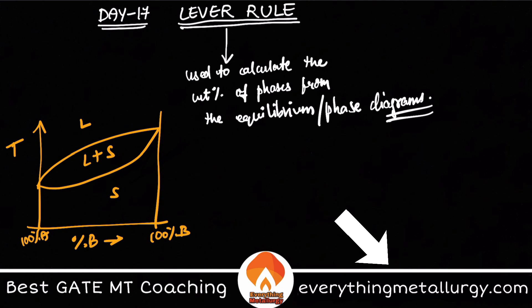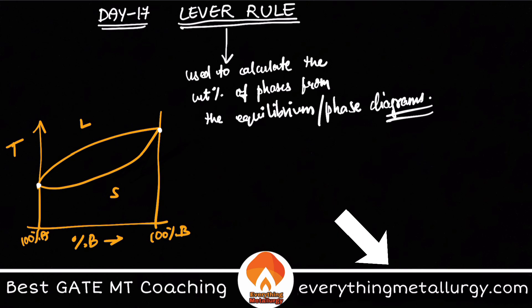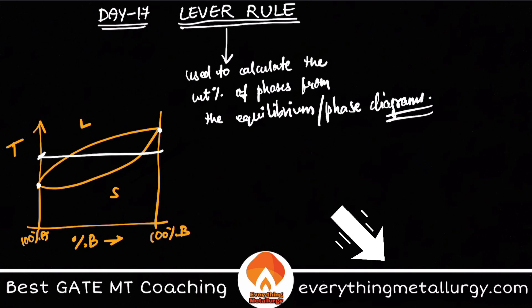These two points are nothing but the melting points of A and B respectively. I want to explain lever rule here. At a particular temperature, let's draw a line — that means this is the temperature we are dealing with. At that particular temperature, you want to calculate what is the percentage of liquid or the percentage of solid that is present.